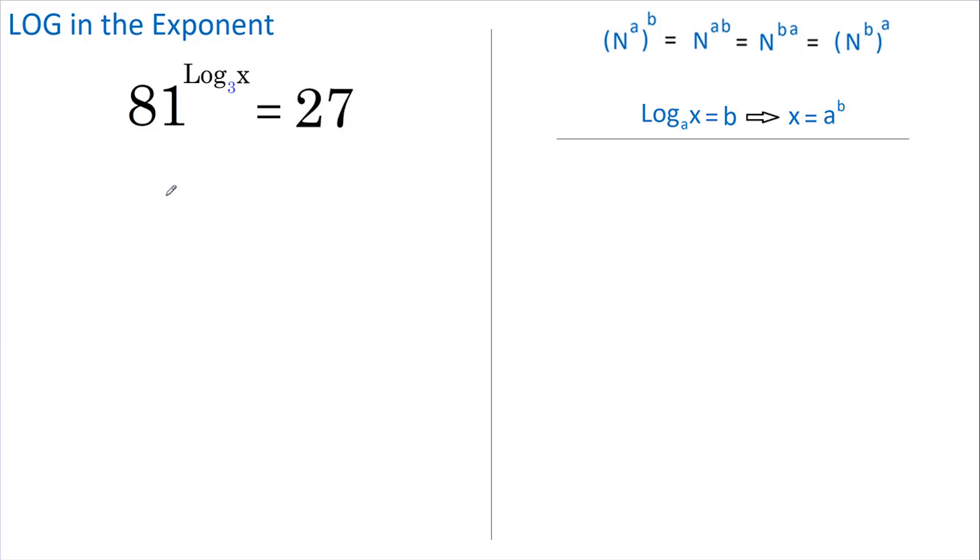That means we can rewrite this as 3 to the power of 4 to the power of log base 3 of x equals 3 to the power of 3.